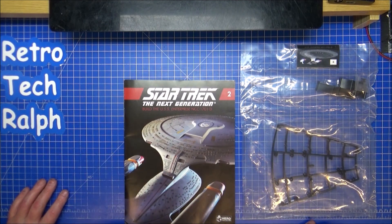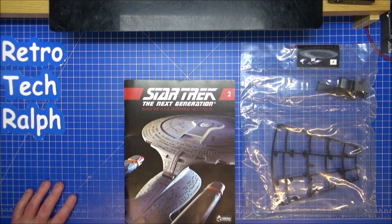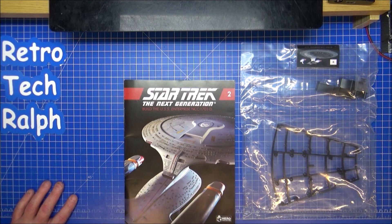Hi guys, Retro Trek Ralph here with another issue of the Star Trek The Next Generation Build, the USS Enterprise NCC1701D by Eagle Moss and Hero Collector.